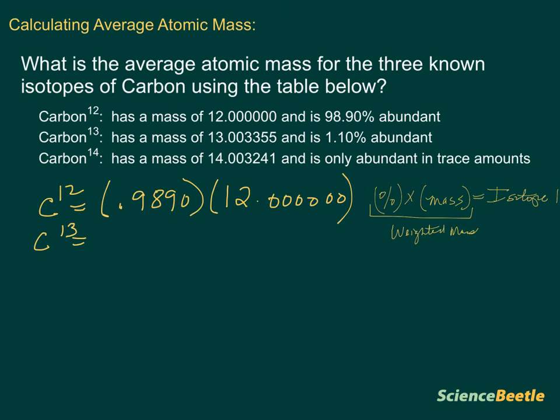And that one's going to be equal to the following. It's going to be equal to 0.011, and we're going to multiply that times 13.003355.